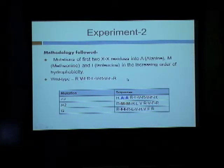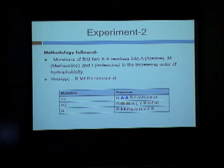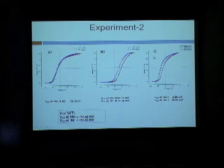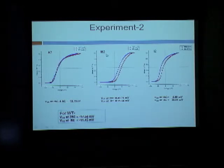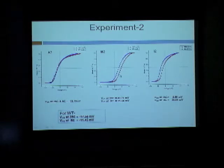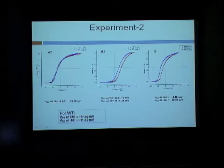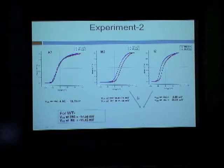In Experiment 2, we mutated the first two hydrophobic residues in the S4 region to alanine (A2), methionine (M2), and isoleucine (I2) — in increasing order of hydrophobicity — and recorded at two temperatures. A2 shows very little shift between temperatures, but M2 and I2 each show approximately a 25 millivolt shift between the two temperatures. As temperature decreases, the process becomes more favorable and V_half decreases. Therefore, M2 and I2 are both cold-sensitive mutations.